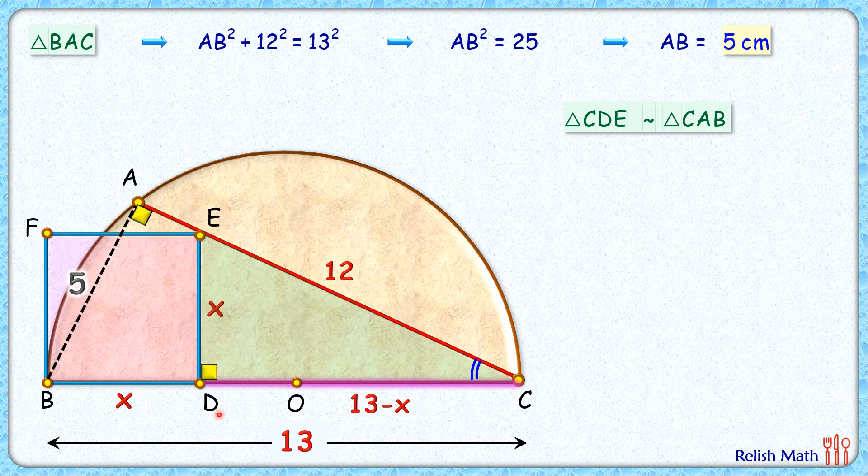Thus the ratio of corresponding sides will be equal. We can say that CD/DE equals CA/AB.